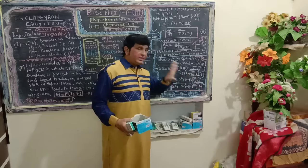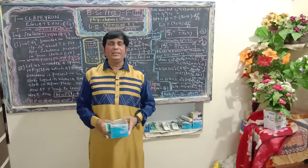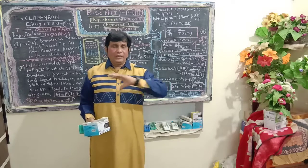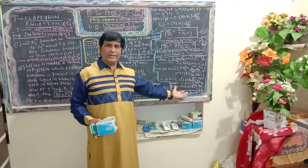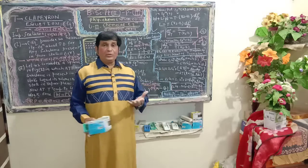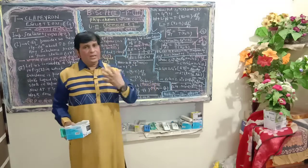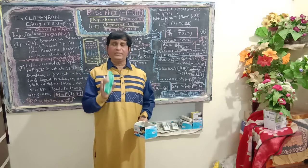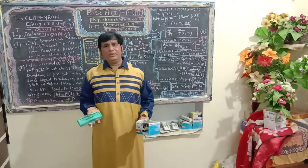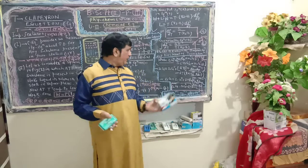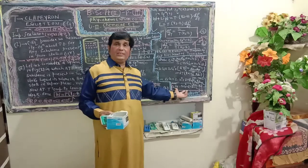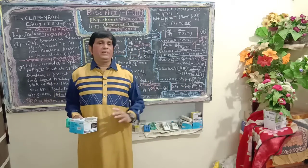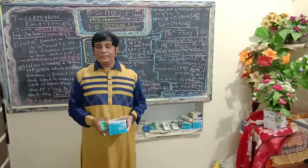Thus, ΔG equals ΔG⁰ plus RT·ln Kc. When selecting Gibbs free energy and establishing it by taking activities of reactants A and B and products C and D, it is important to remember that three types of Gibbs free energy are used: G (defined at any temperature), G⁰ (standard), and ΔG (change in free energy). These are the fundamental distinctions. We will discuss the full thermodynamic derivation in the classroom tomorrow. Thank you very much.